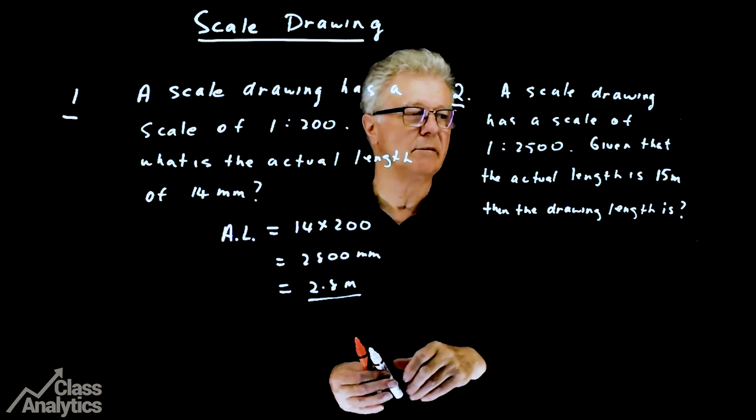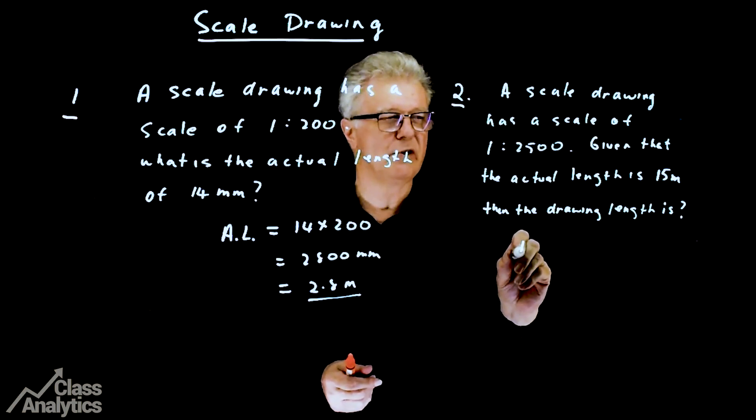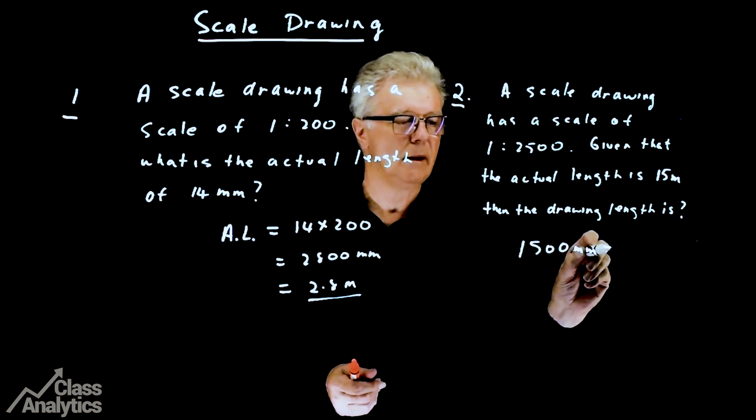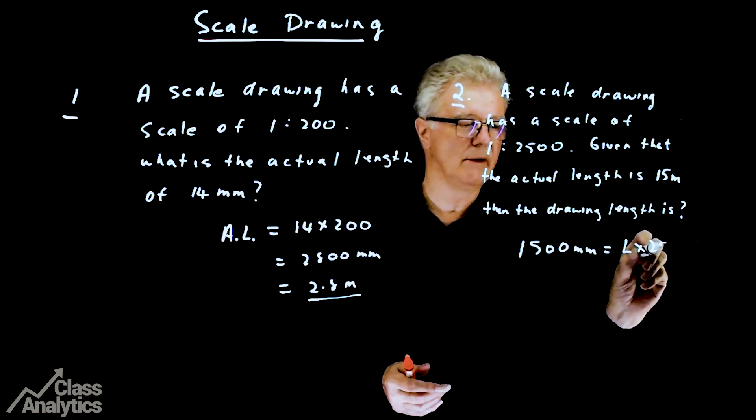Then the drawing length is, we'll just set it up the other way. We'll say that changing this to millimeters, 1,500 millimeters, and that will be equal to the length multiplied by 2,500.